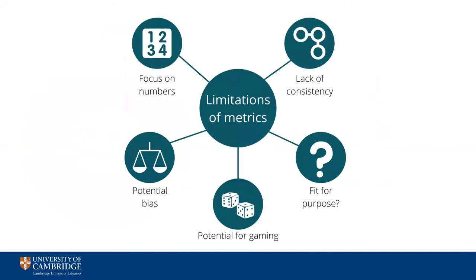Although metrics are part of academic life, it's important to use them critically and be aware of their limitations, especially if you're going to use them as a measure of impact. Metrics of any type are numerical measures, and numbers often mask a bigger story. At worst they could be manipulated, whilst at best they can leave out important context. Although measures such as altmetrics do attempt to address this, at the end of the day this is all still reducing potential impact to a numerical measure, and there are many impacts out there which just can't be quantified in this way.